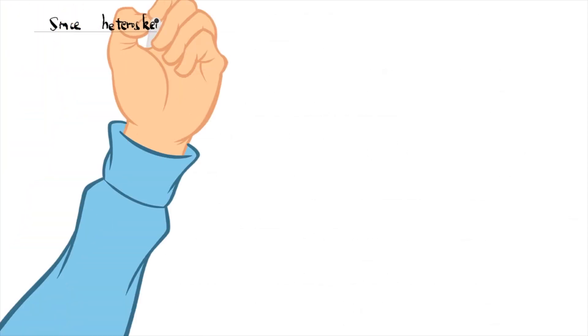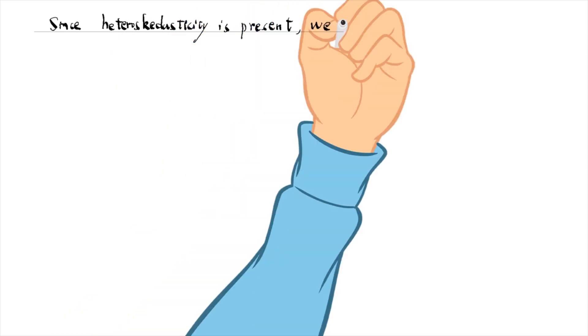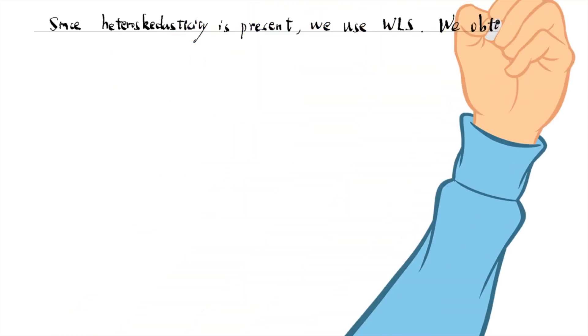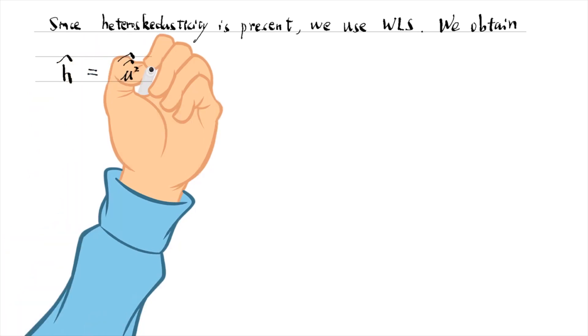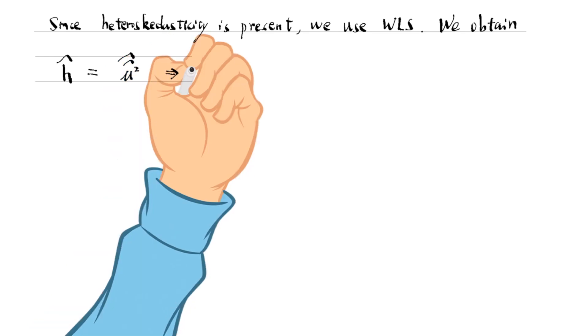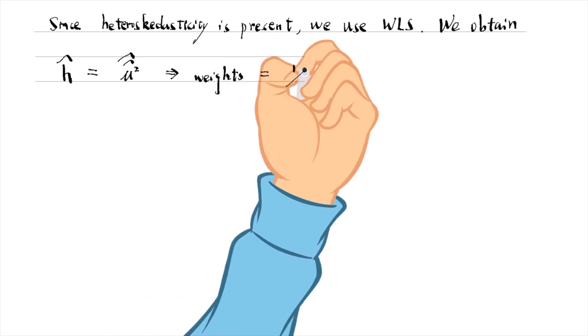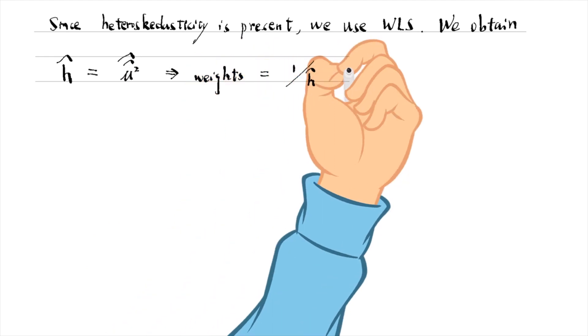Since heteroscedasticity is present, we use weighted least squares. We obtain the fitted values of the mu-hat squared. We call it h-hat. We can verify that h-hat is positive. Then we generate the weights equal to the inverse of it. We can estimate the original model by weighted least squares using these weights.